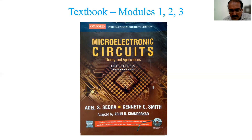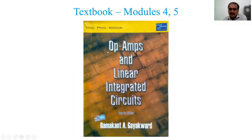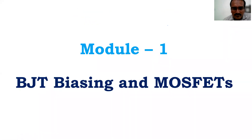In the syllabus copy, specific sections are mentioned — like 3.4, 3.5, 3.5.1 — so tick those off. If you're not sure, come and meet me. For Modules 4 and 5 you refer to the second book: Op-Amps and Linear Integrated Circuits by Ramakant Gayakwad, fourth edition, available in both Pearson and low-price editions. Now we'll start with Module 1, which begins with the biasing of BJTs and MOSFETs.